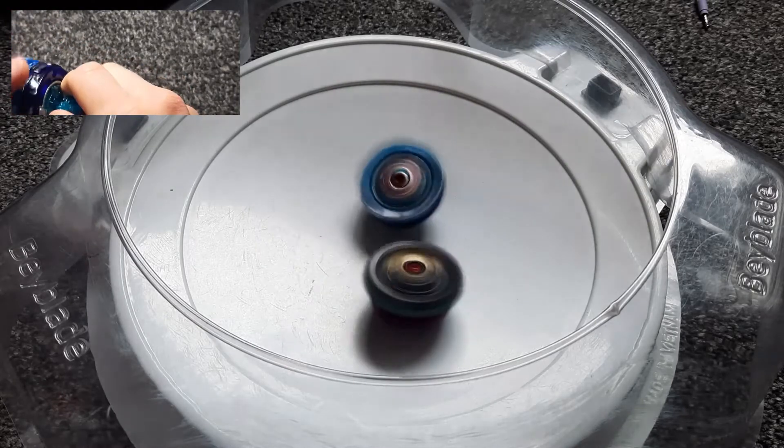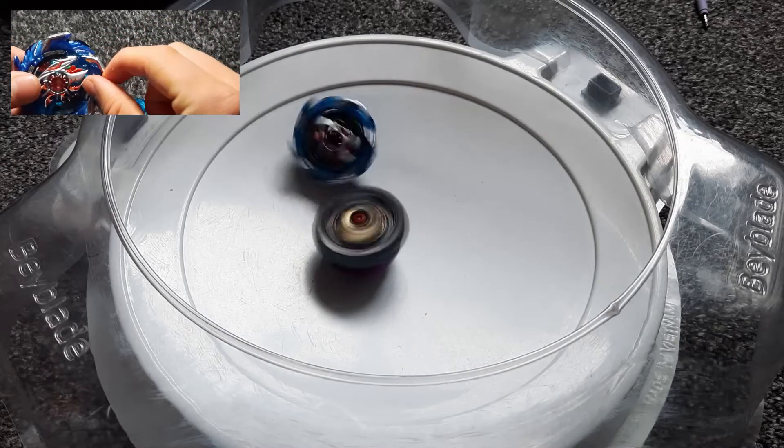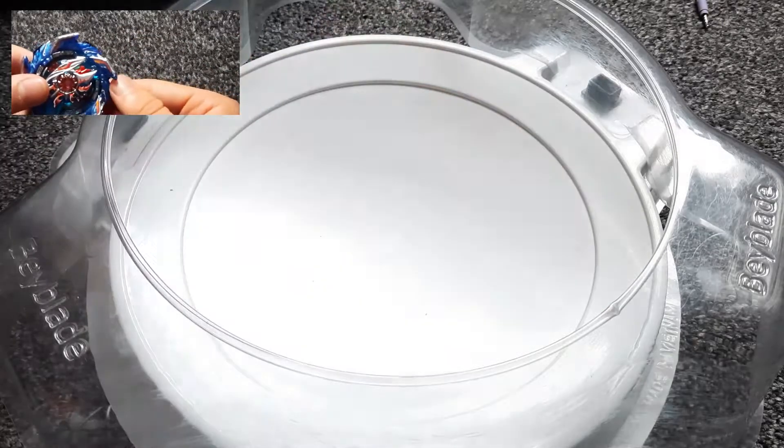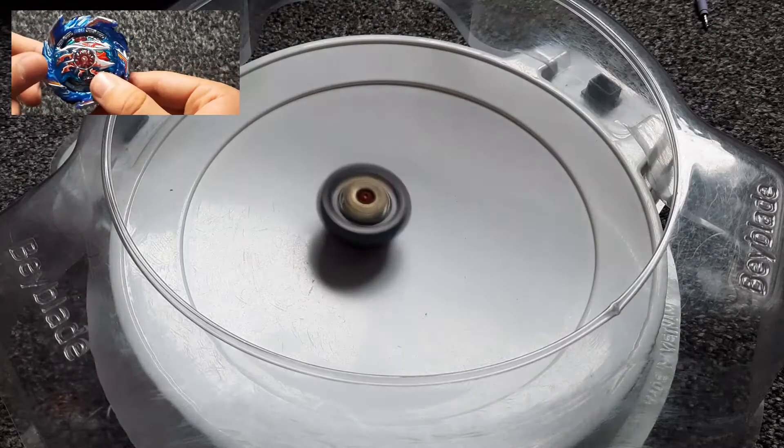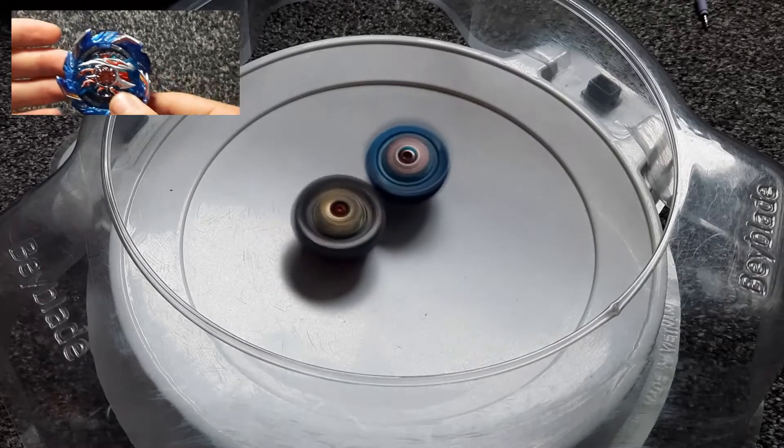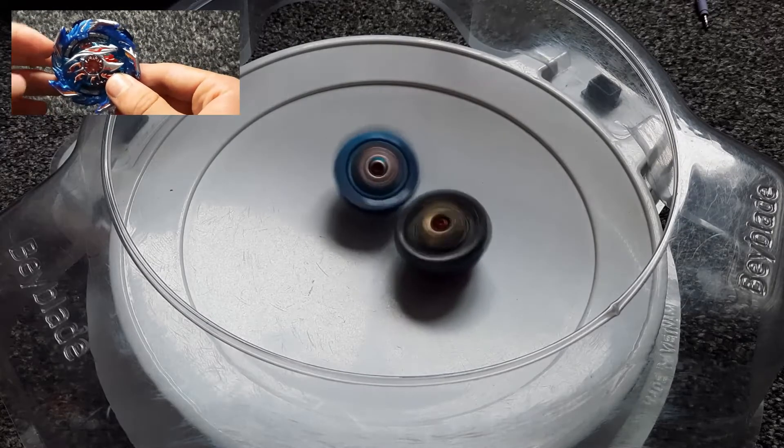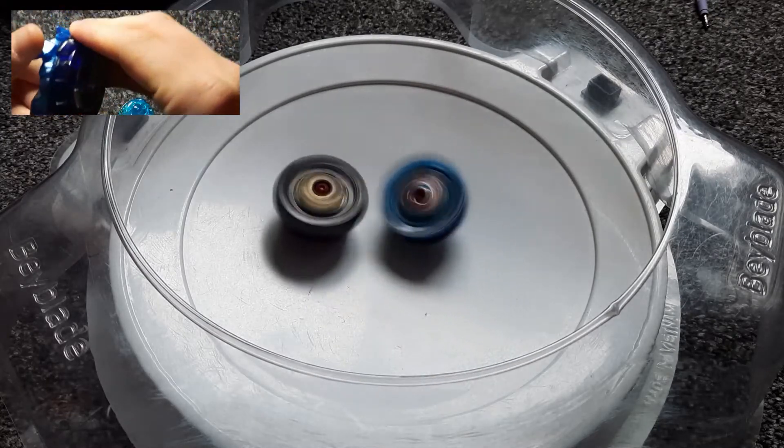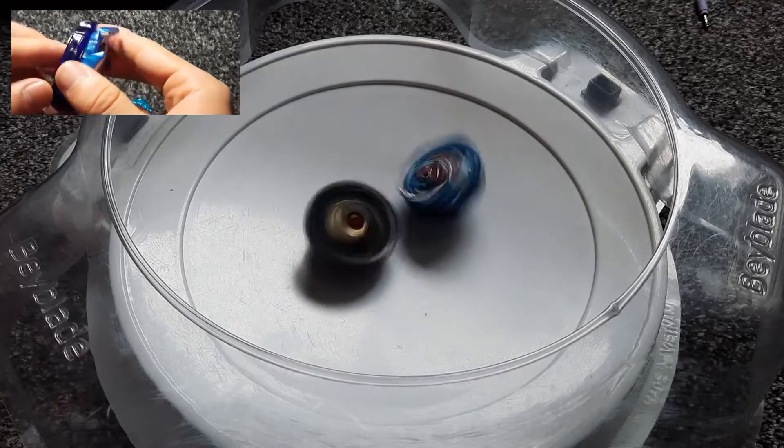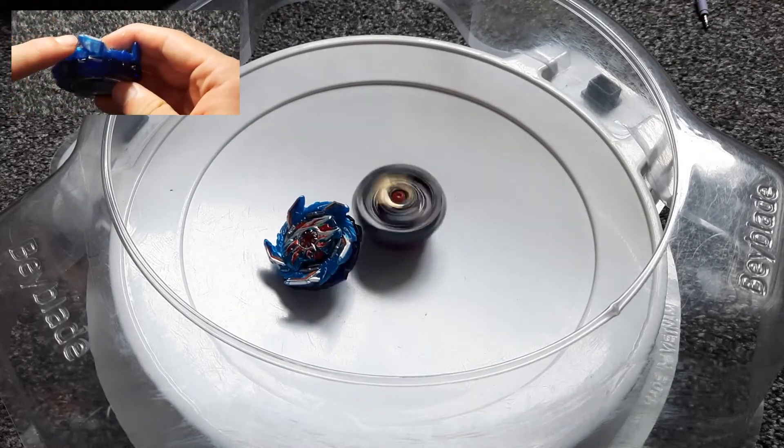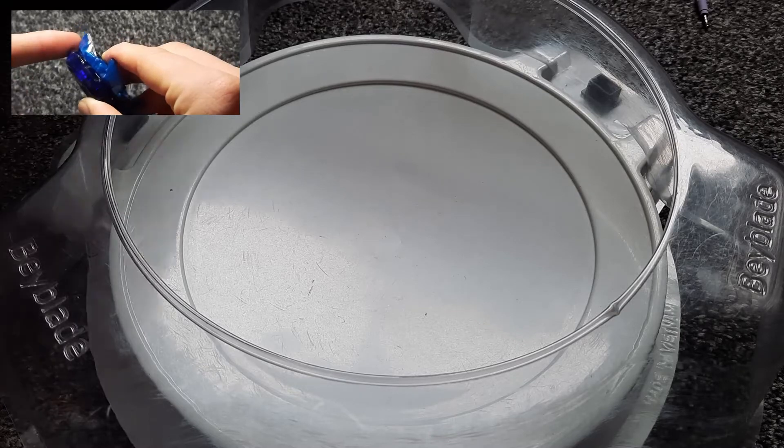This bay does have a mode change. As you can see the wings on the chassis are in between the wings on the ring which means instead of making contact with the ring it will make contact with the chassis. This is its 10 bladed mode or defense mode. It does have the option to switch and go into 5 bladed mode or attack mode which is when the wings on the chassis are lined up with the ring. You have this huge contact point which can be used for good smash attacks.